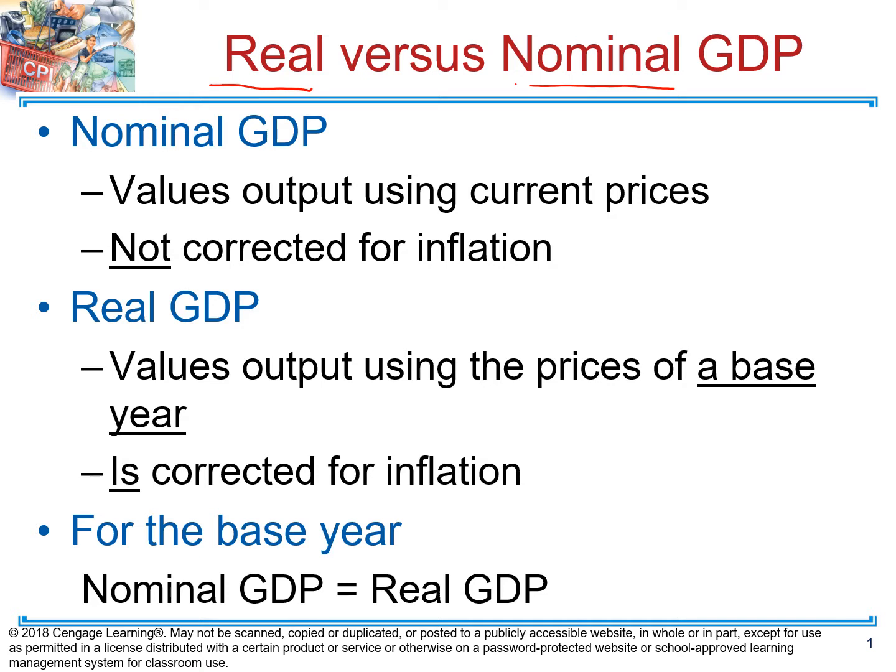When economists look at GDP, they break it down into different components — like consumption, investment, government spending, and net exports. Looking at those components separately, they can better analyze what is going on in the economy.